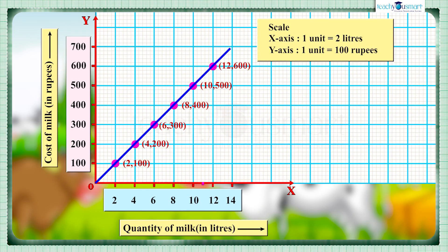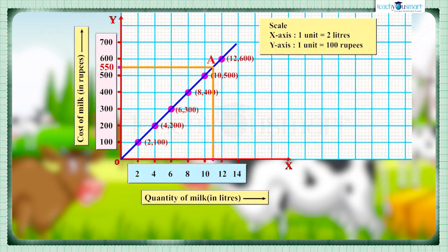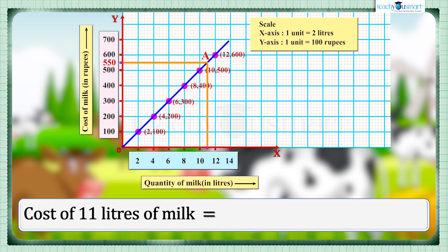Suppose we want to know the cost of 11 liters of milk. Then locate 11 on the x-axis and draw a vertical line to the graph such that it meets at a point. From that point, draw a horizontal line to the y-axis, and the meeting point provides the answer. That is, the cost of 11 liters of milk is 550 rupees.